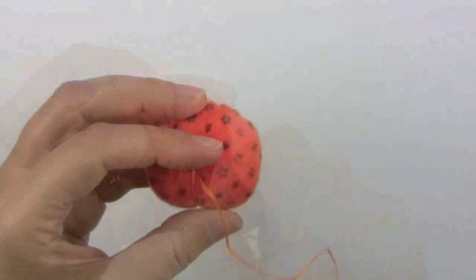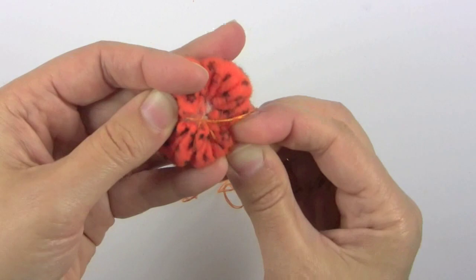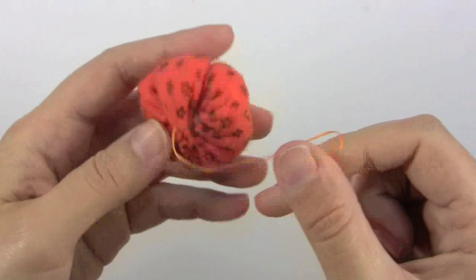You just want to make about five or seven, like six maybe, just however it looks good because each pumpkin will be a little bit different. This is the last one so I'm going to go ahead and do one of those stitches across the top again so then I can tie this off.